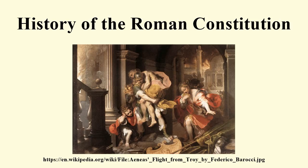In 287 BC, the plebeians seceded to the Janiculum Hill. To end the secession, a law was passed which ended the requirement that patrician senators consent before a bill could be brought before the plebeian council for a vote. This robbed the patricians of their final weapon over the plebeians, and the ultimate control over the state fell not onto the shoulders of democracy, but onto the shoulders of the new patricio-plebeian aristocracy. By the middle of the 2nd century BC, the economic situation for the average plebeian had declined significantly. Farmers became bankrupted, and masses of unemployed plebeians began flooding into Rome and into the ranks of the legislative assemblies, where their economic status usually led them to vote for the candidate who offered them the most. A new culture of dependency was emerging, which would look to any populist leader for relief.